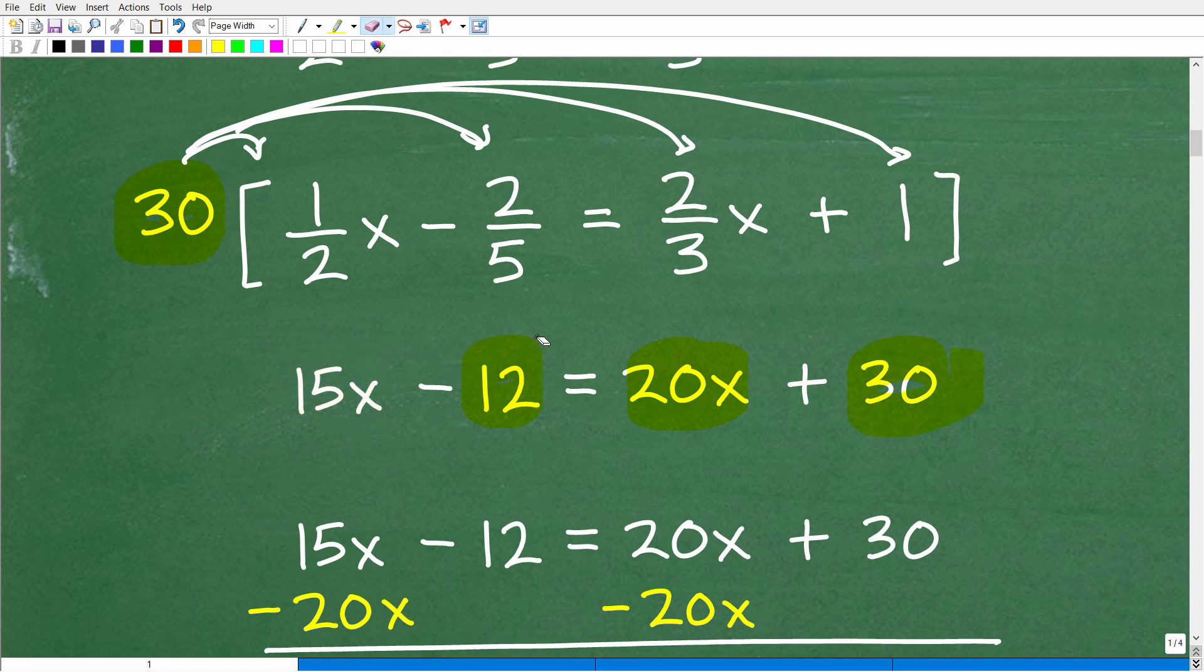All right, so what we've done here is remove all the fractions from this original equation right here. And now we're looking at this lovely equation right here. 15x - 12 = 20x + 30. Much easier to deal with these numbers than all the fractions.